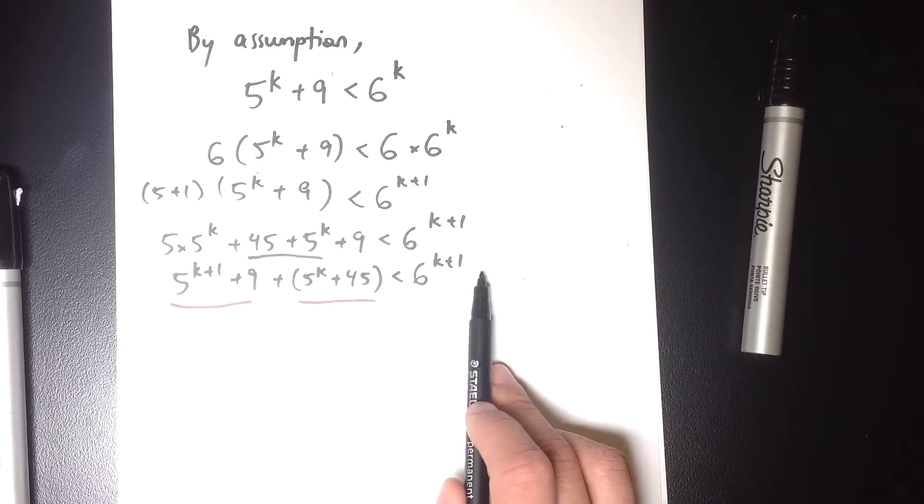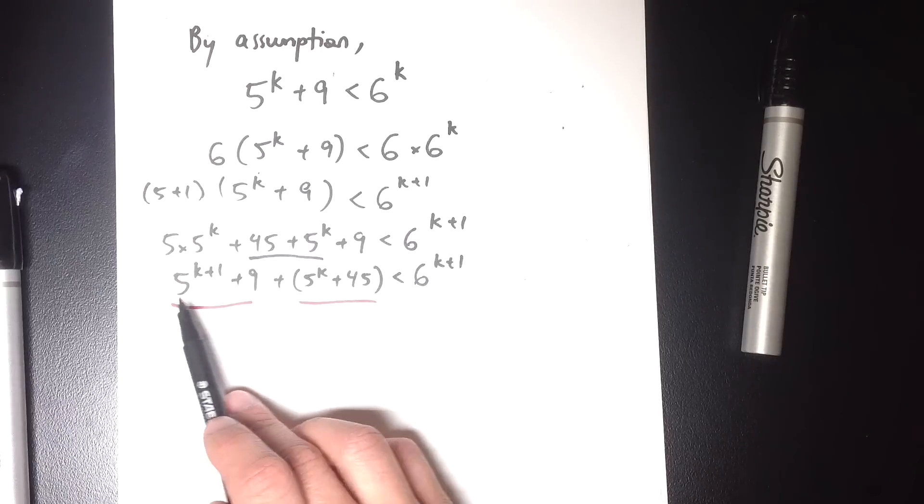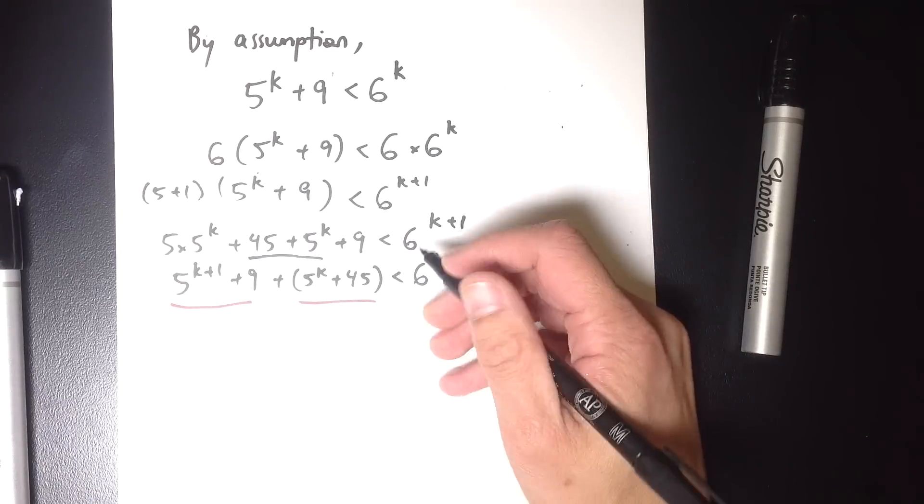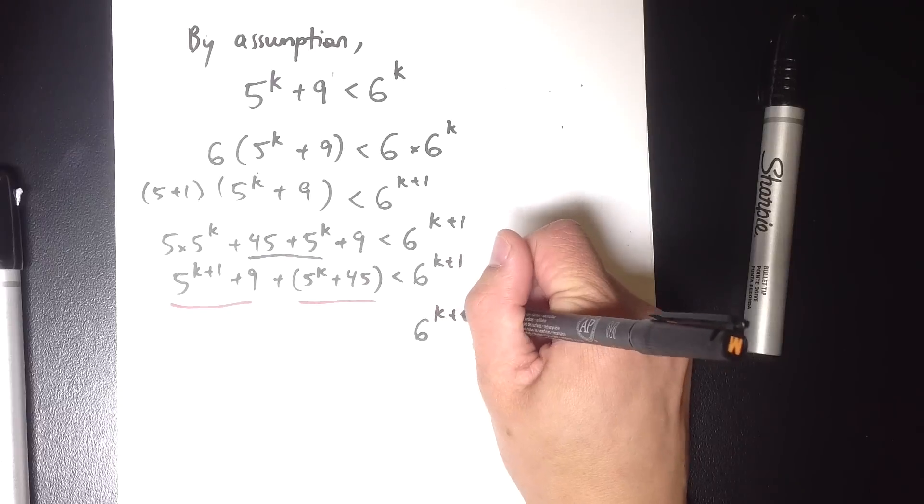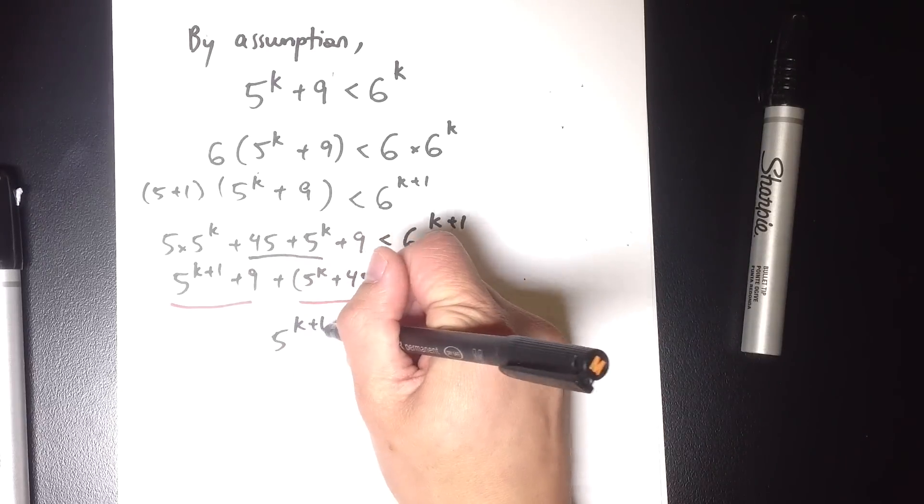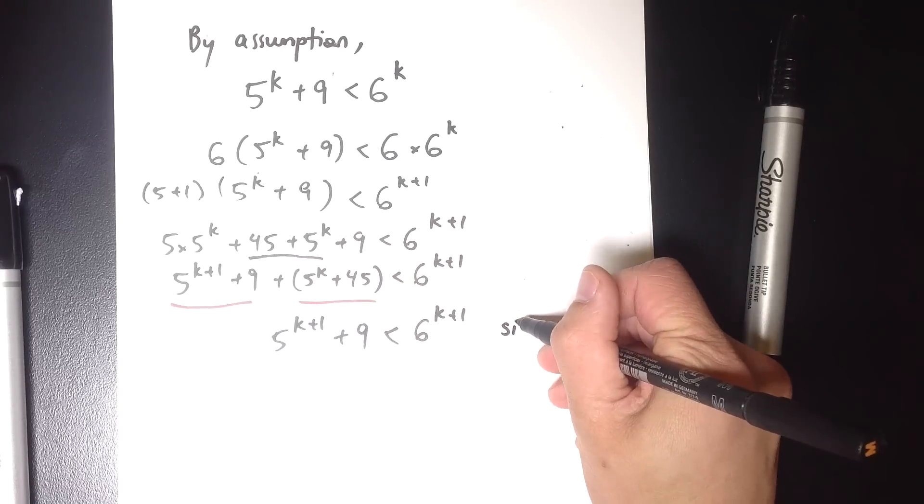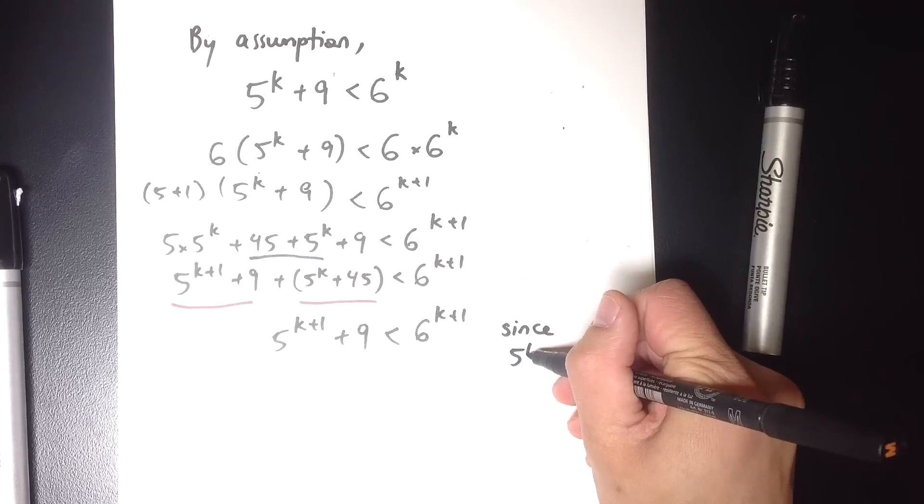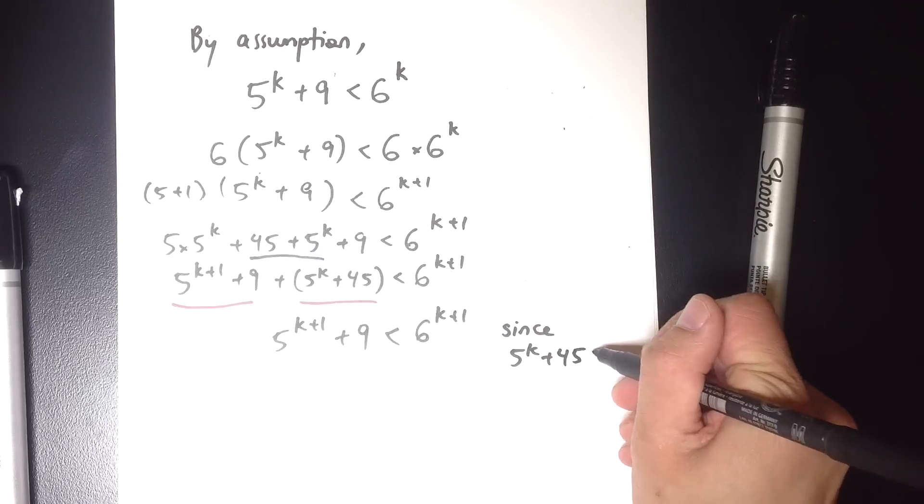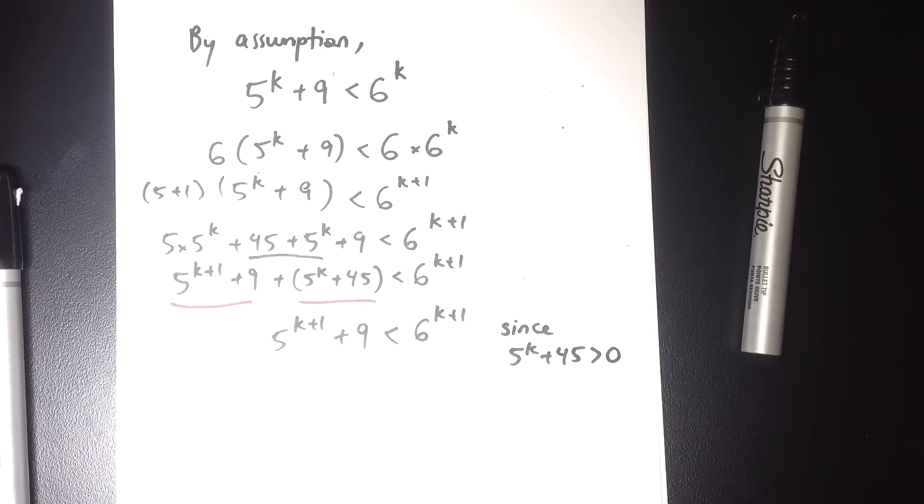So I can say, since 6 to the k plus 1, this side is greater than this side, all of it, I can say that it's greater than just a part of it. I can say that it's greater than just that on its own, without this extra bit, since 5 to the k plus 45, that must be positive, because k must be positive. So just in case you missed what that step is about, it's a little bit like this.